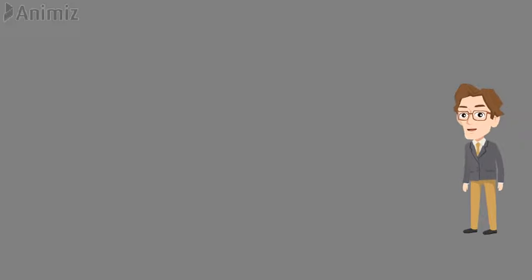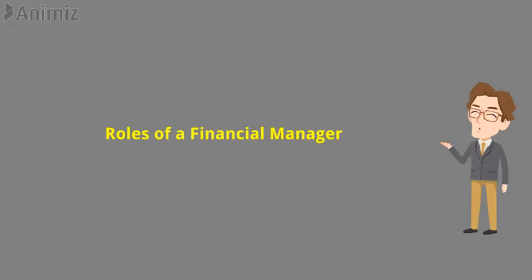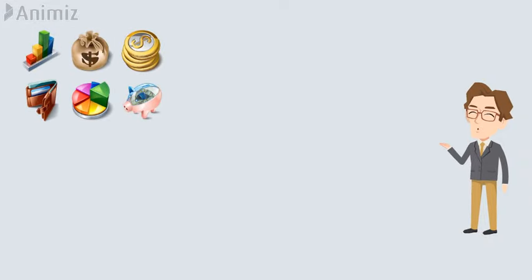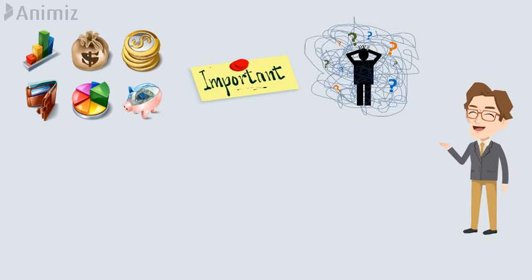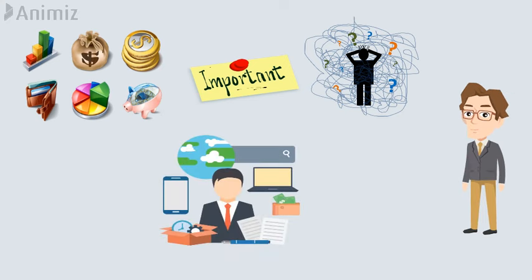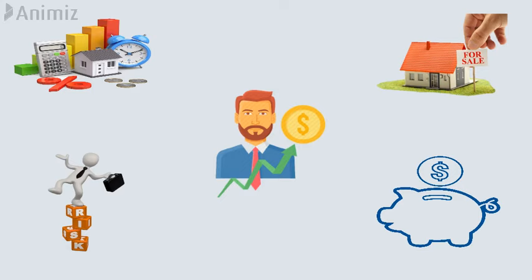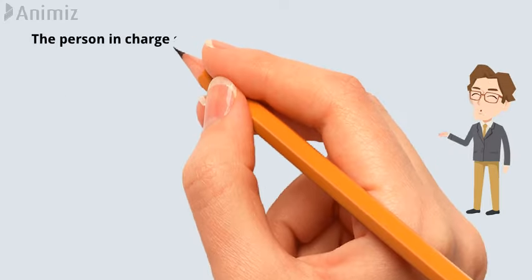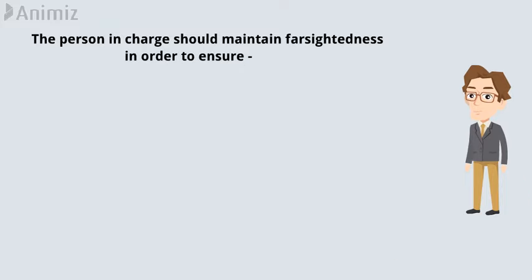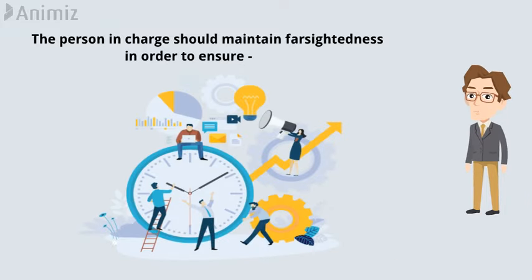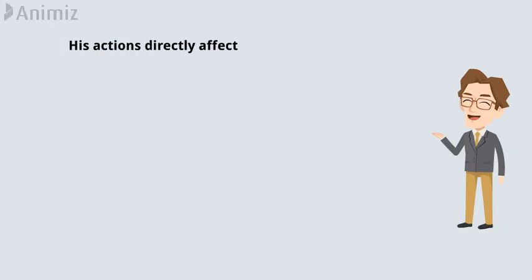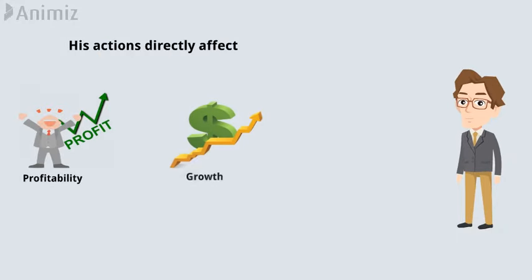In this video you are going to learn the roles of a financial manager. The financial activities of a firm are one of the most important and complex activities. A financial manager is a person who takes care of all the important financial functions of an organization. The person in charge should maintain farsightedness to ensure that funds are utilized in the most efficient manner. His actions directly affect the profitability, growth, and goodwill of the firm.